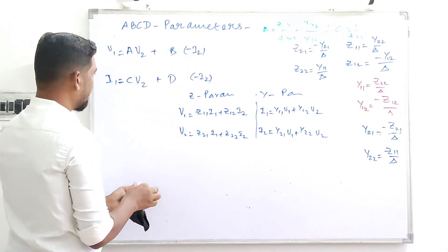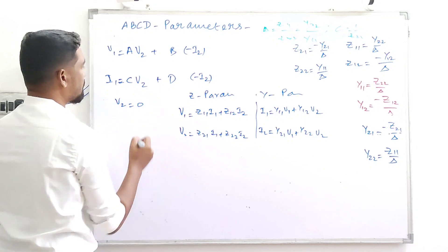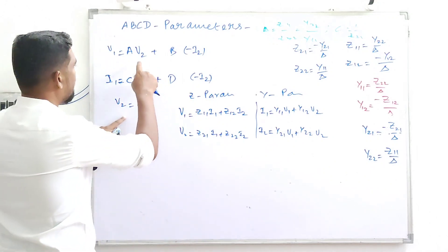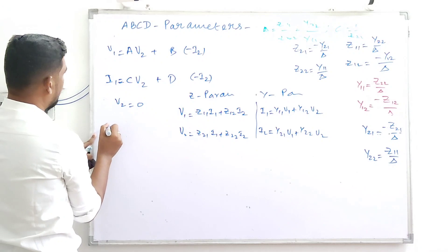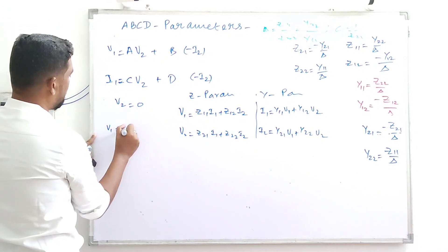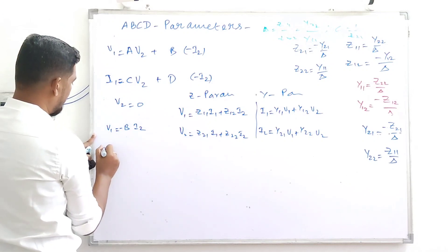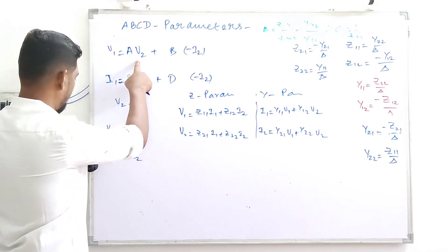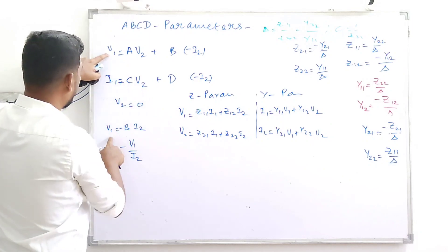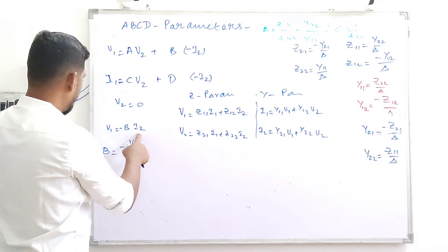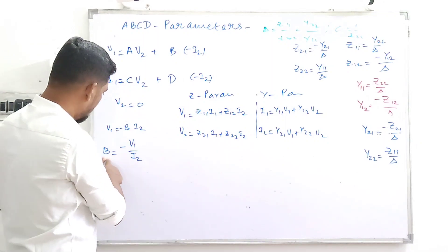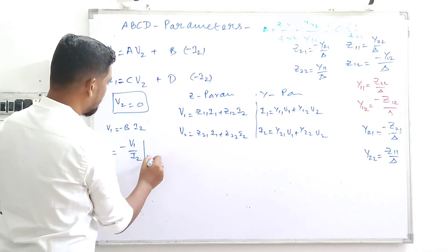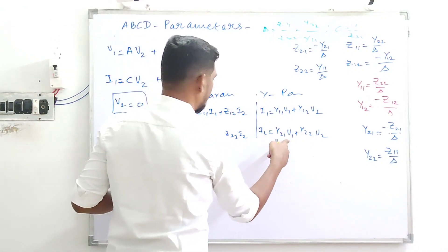With V2 = 0 (output short-circuited), from the first ABCD equation: V1 = -B·I2, so B = -V1/I2 with V2 = 0. The same condition V2 = 0 is applied to the Z and Y parameter equations.